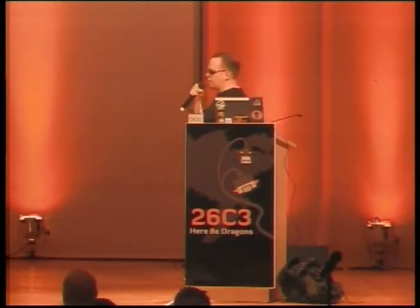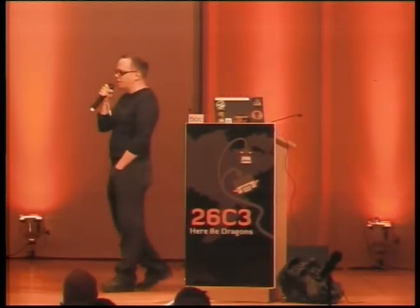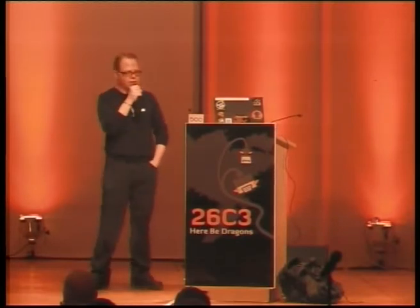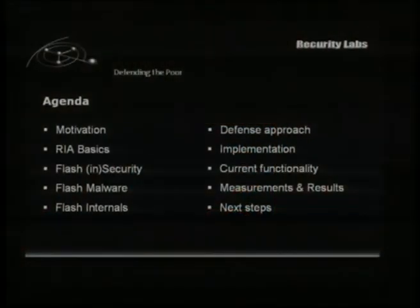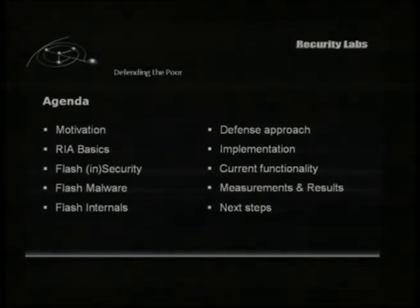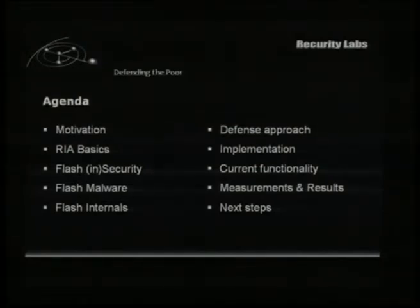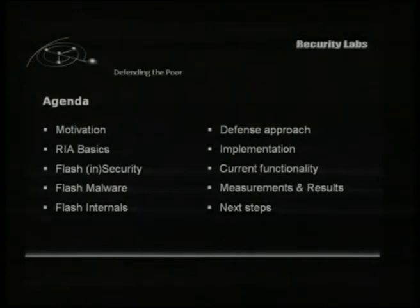So, what are we talking about? We're talking about what's the motivation behind this research — this is why I couldn't give it away before, it's part of the slides. We're talking a little bit about RIA basics and how Flash security works, what Flash malware types we're seeing. We're going to talk about the Flash internals — that's the fun part. Then we're talking about the defense approach we came up with, how we implemented it, what works, what doesn't work.